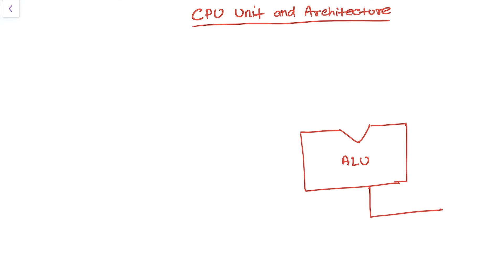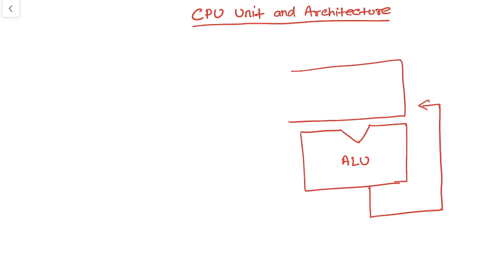The ALU produces some results and then finally writes back those results into the registers. The registers sit on top of the ALU. In the registers we have R0, R1, R2, R3, R4, and so on — there can be many registers.